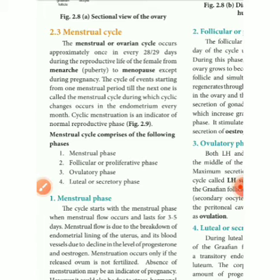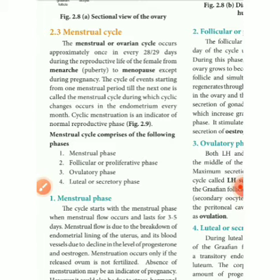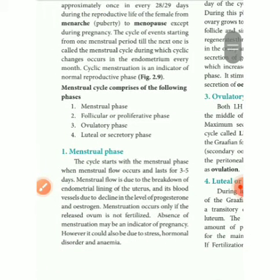Dysmenorrhea — pain associated with menstruation is called dysmenorrhea. If pain occurs during menstrual time, it is called dysmenorrhea. It is the most commonly reported menstrual disorder. There are two types of dysmenorrhea: primary dysmenorrhea and secondary. Primary means pain or cramp during the menstrual period, caused by secretion of prostaglandins in the uterus. Secondary dysmenorrhea is a disorder of the reproductive system, such as endometriosis, uterine fibroids, and similar conditions.